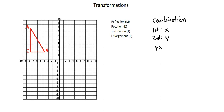I have listed four transformation notations here to the right of the coordinate plane: reflection, rotation, translation, and enlargement, represented by m, r, t, and e, respectively, as given in the IGCSE syllabus for 0580. So we'll use those notations in our example.